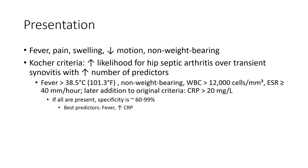If four are present, specificity is 60 to 90 percent. Best predictors: fever and increased CRP.